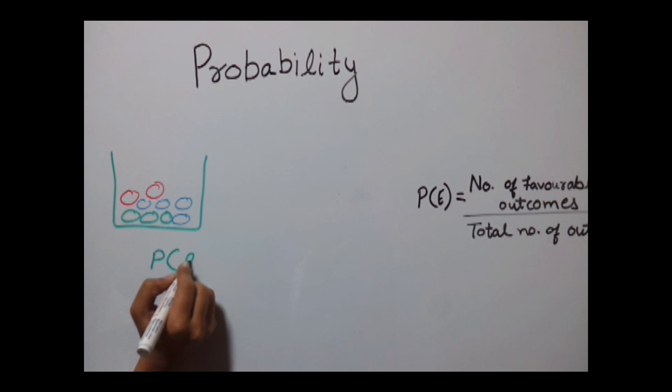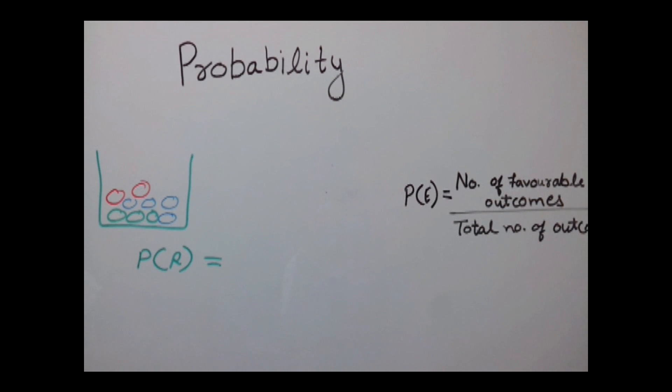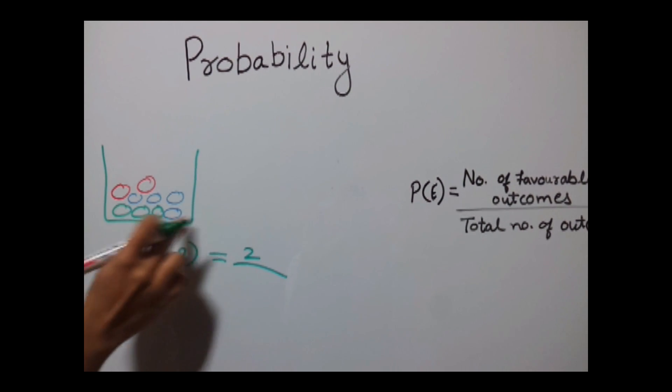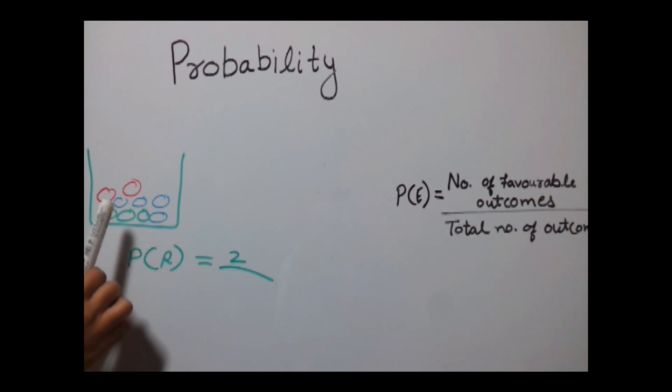Probability of red would be, since there are only two red balls, number of favorable outcomes would be two. Put two over here. Upon total number of outcomes, total number of outcomes would be equal to total number of balls over here.